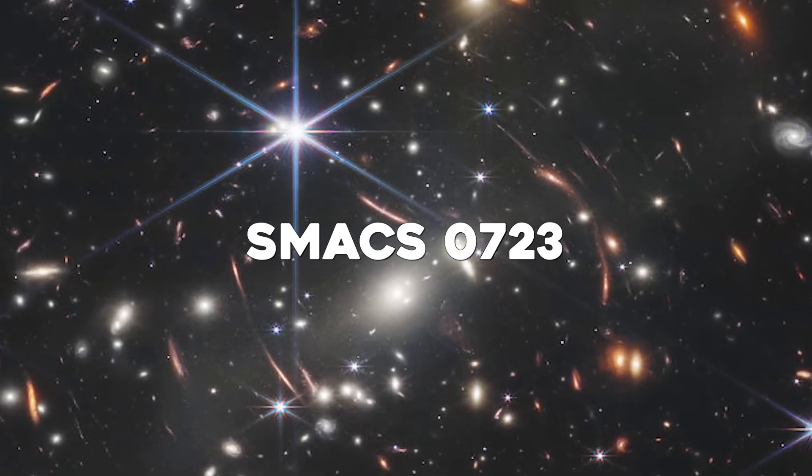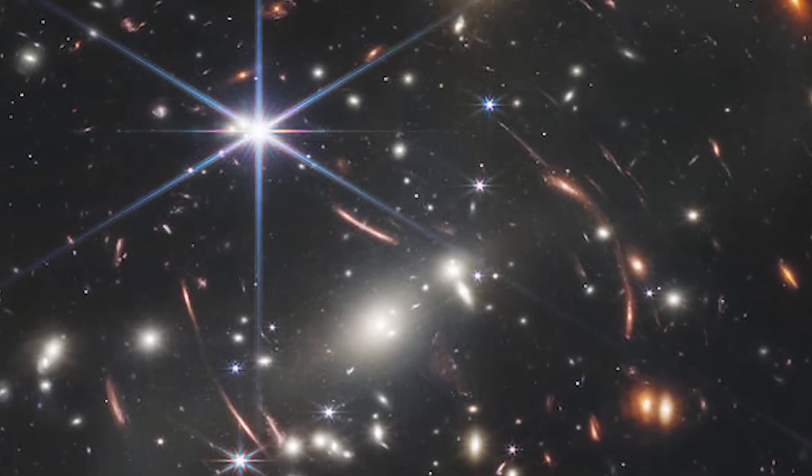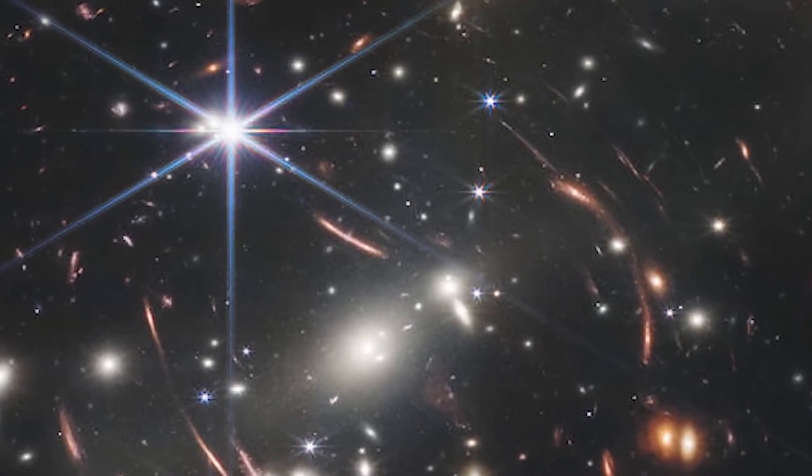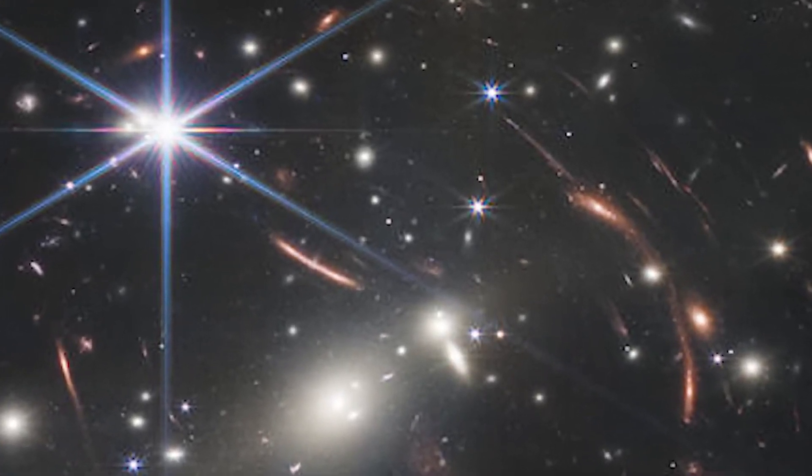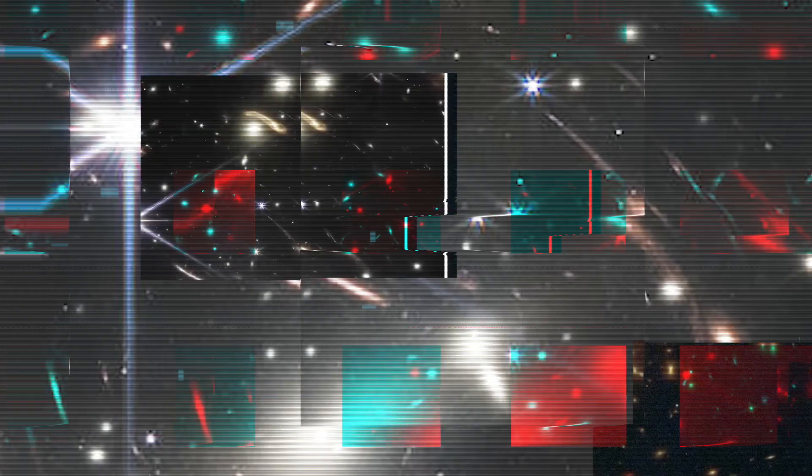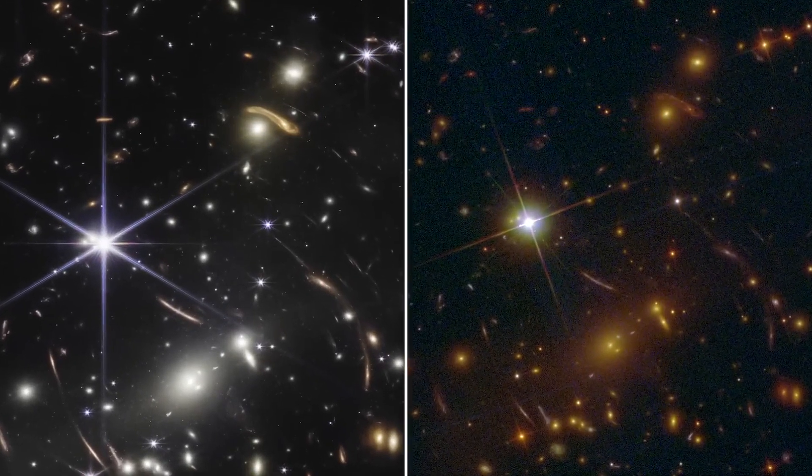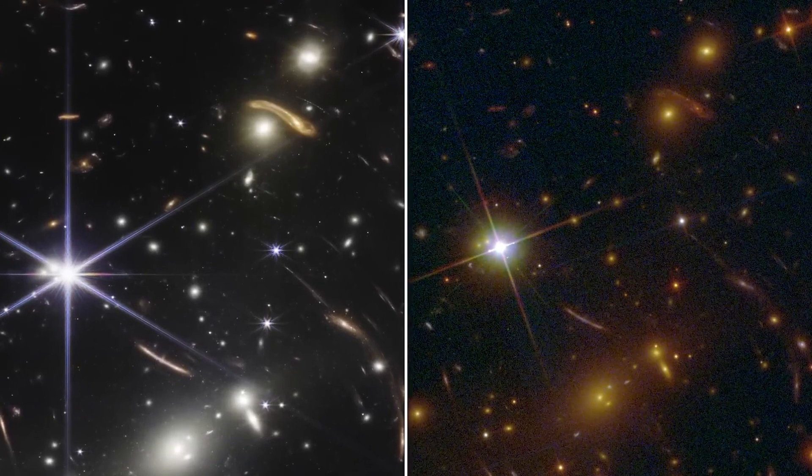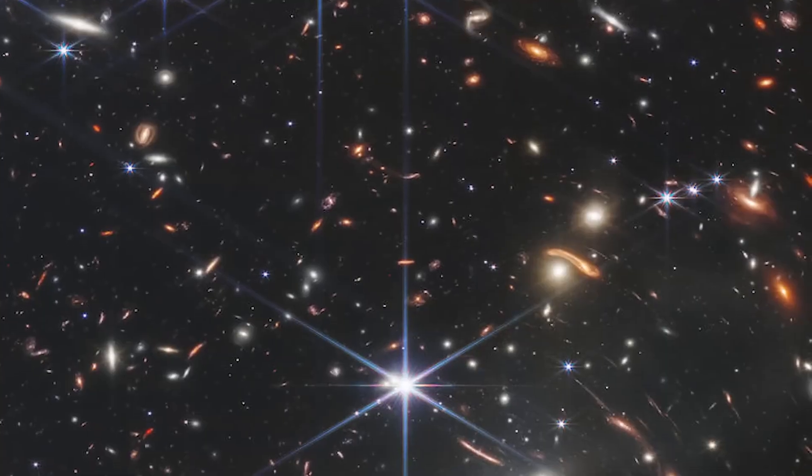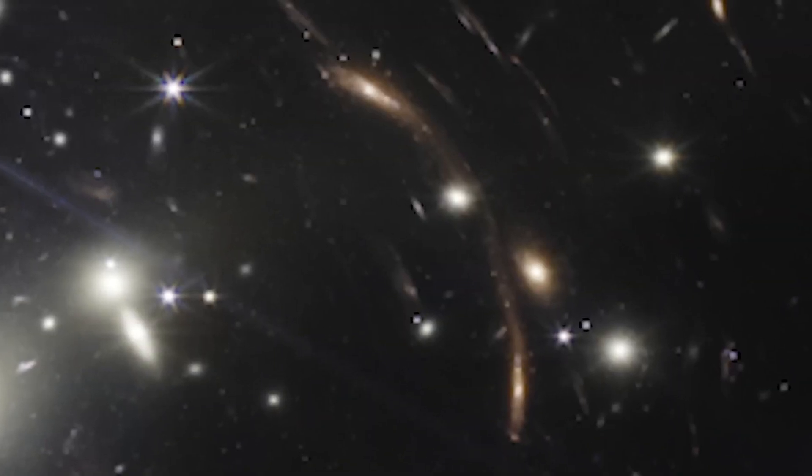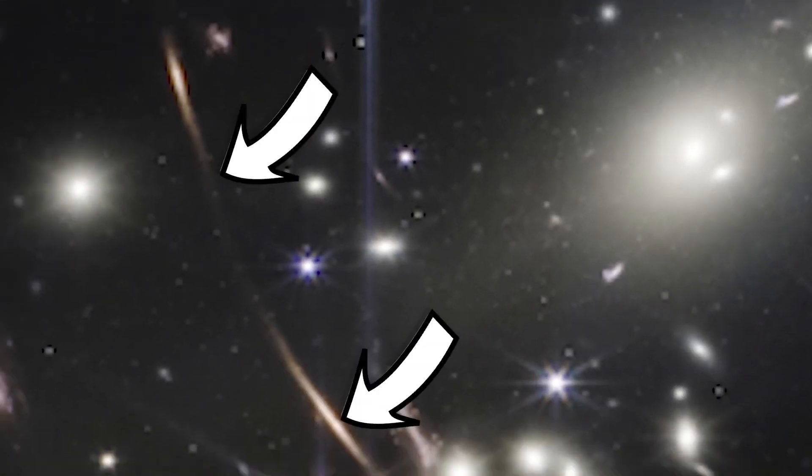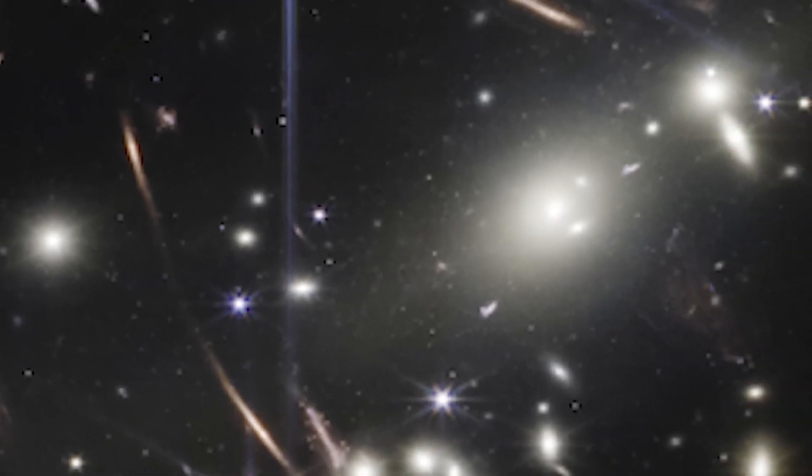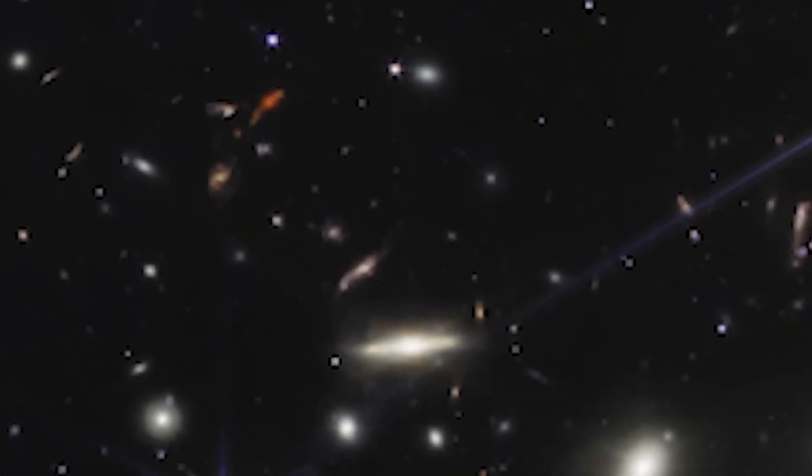Of course, we can't forget SMACS 0723 either. As the final target for the first James Webb images, SMACS 0723 is an interesting choice. The NASA ESA CSA James Webb Space Telescope has produced the deepest and sharpest infrared image of the distant universe to date. Known as Webb's first deep field, this image of galaxy cluster SMACS 0723 is overflowing with detail. Thousands of galaxies, including the faintest objects ever observed in the infrared, have appeared in Webb's view for the first time. This slice of the vast universe is approximately the size of a grain of sand held at arm's length by someone on the ground.